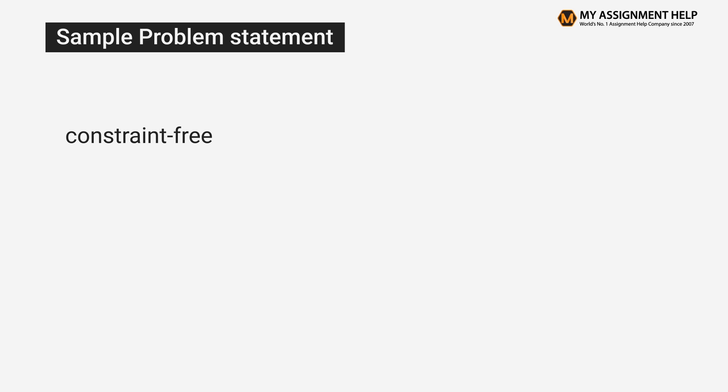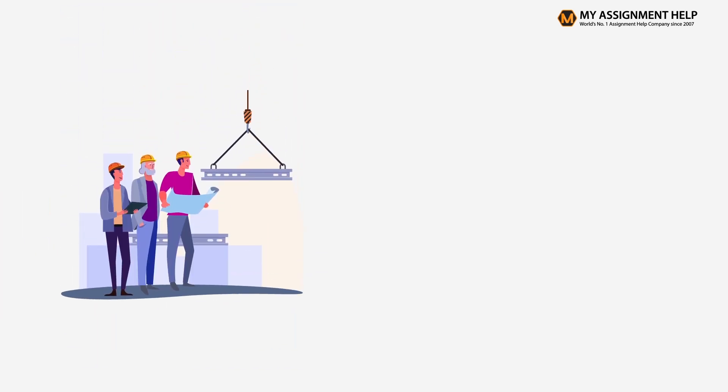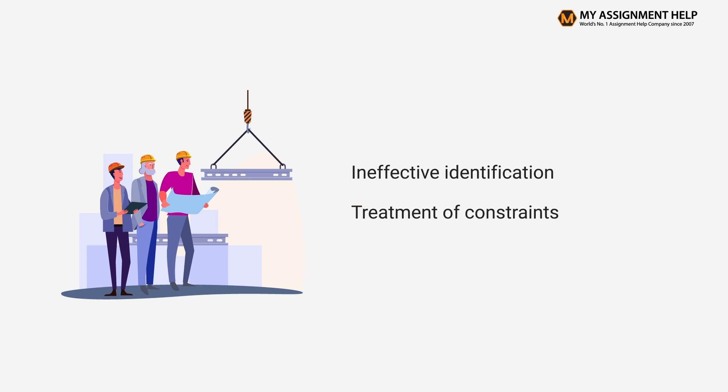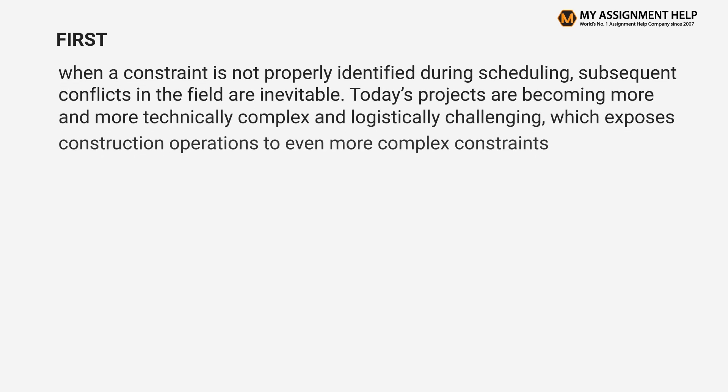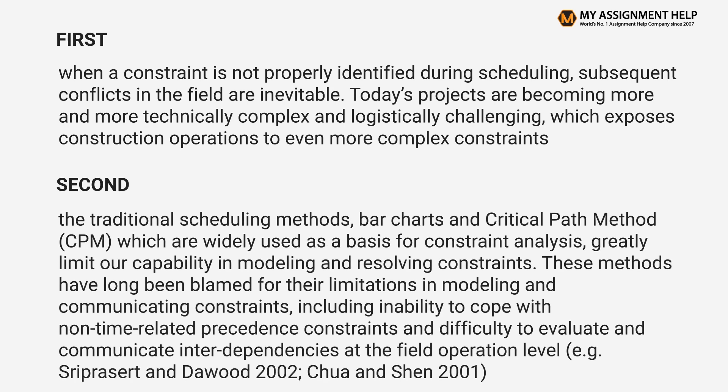Sample problem statement: The importance of developing a constraint-free and reliable work plan has long been recognized by the industry. However, numerous construction projects are still plagued by delays and cost overruns, frequently traced to ineffective identification and treatment of constraints. First, when a constraint is not properly identified during scheduling, subsequent conflicts in the field are inevitable. Today's projects are becoming more technically complex, exposing construction operations to even more complex constraints. Second, traditional scheduling methods — bar charts and critical path method (CPM) — greatly limit capability in modeling and resolving constraints. These methods have long been blamed for their limitations, including inability to cope with non-time-related precedence constraints and difficulty evaluating interdependencies at the field operation level (e.g., Prezert and Dawood 2002; Chua and Shen 2001).